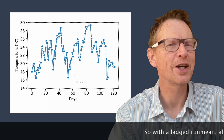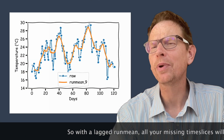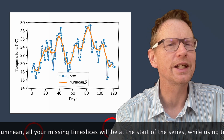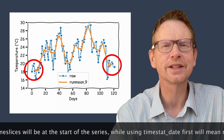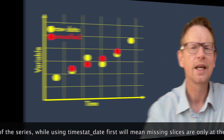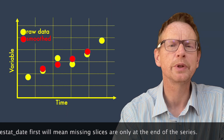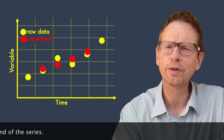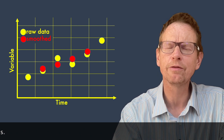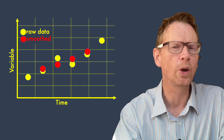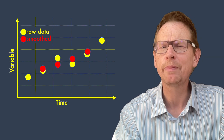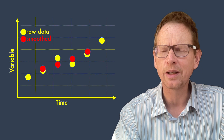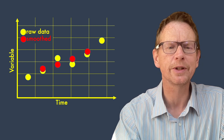If we go back to our series and reapply that running mean, if you look very closely at the start and end of the series there are missing points. This is going to be a problem because what we want to do with this smooth series is subtract it from the original in order to get an anomaly about the moving mean or the moving average. Let's go to the terminal now to see what actually happens.